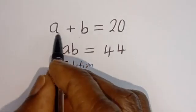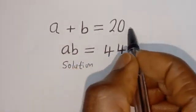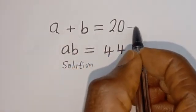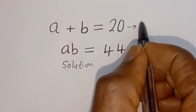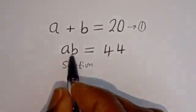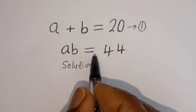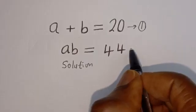From here, A plus B is equal to 20 — let's call this equation 1. And A times B is equal to 44 — let's call this equation 2.